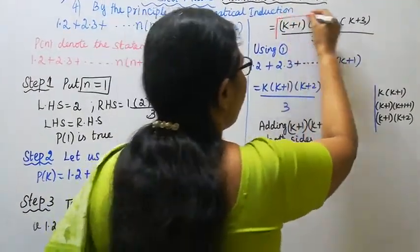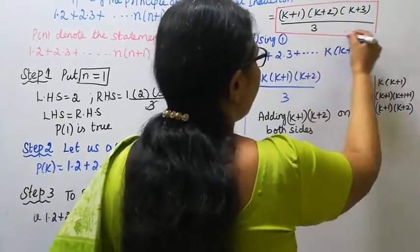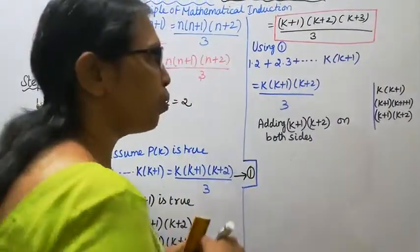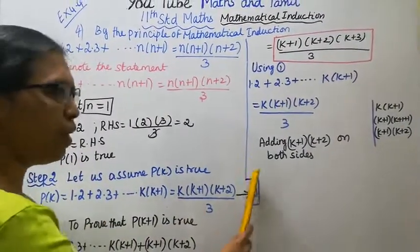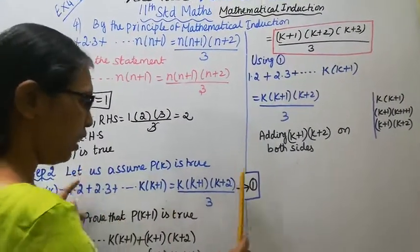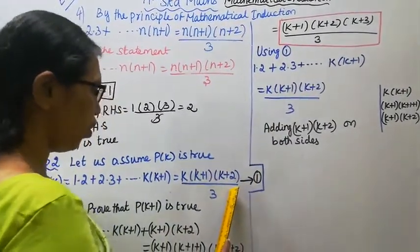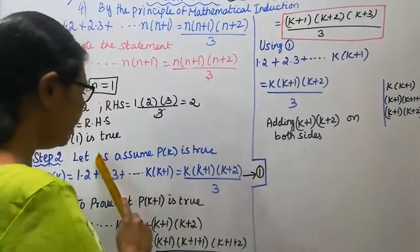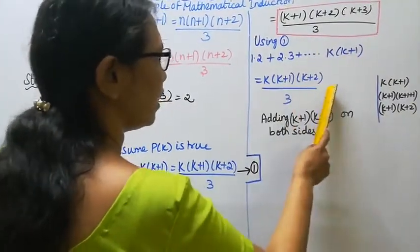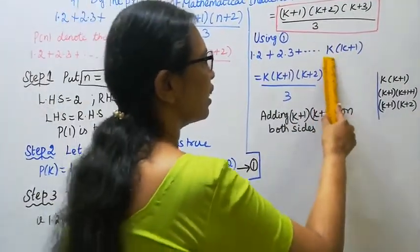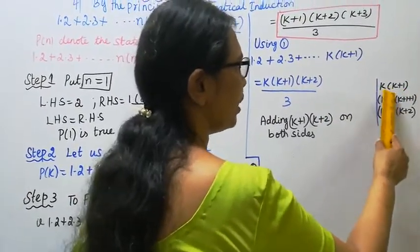Using Step 2, the left hand side equals the right hand side. This is how we can prove P(k+1).